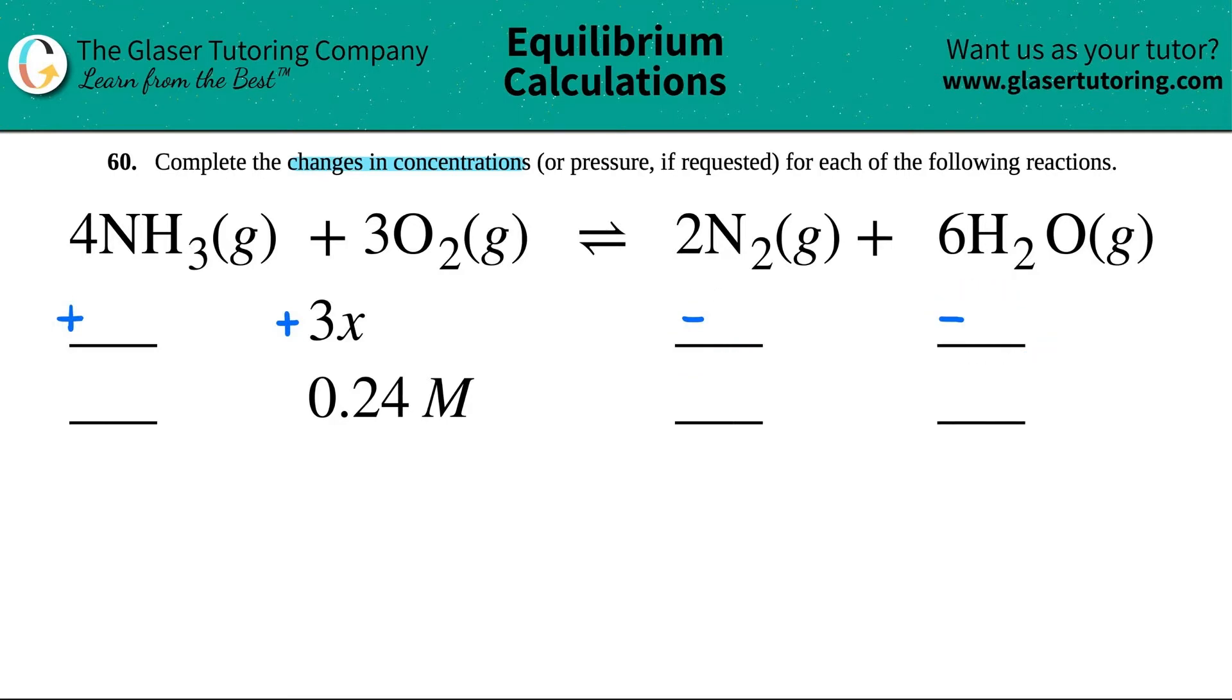But now what are those values? That comes from the coefficients. I have a 4, a 3, a 2, and a 6. If you noticed, since we had three O2s, we went up three times a number. So what would happen for the four NH3s? We would increase by four times a number. This would go down by two times a number, or 2X, and then this would go down by six times a number. So all you're doing with your changes is just going by the coefficient values.